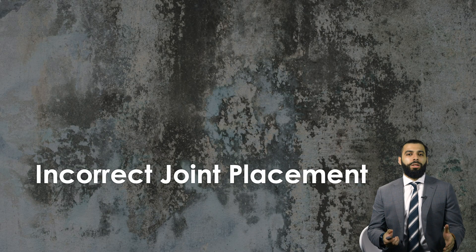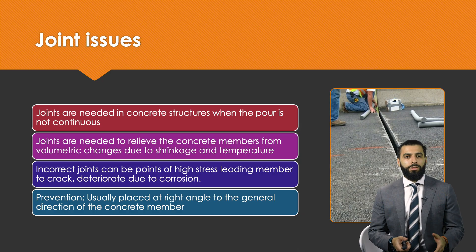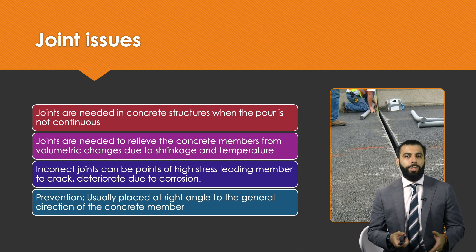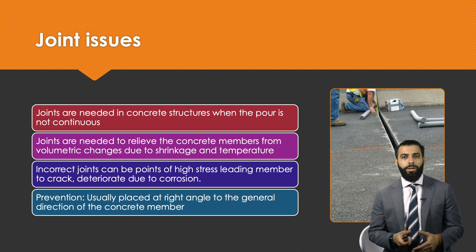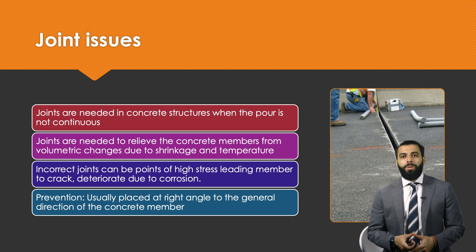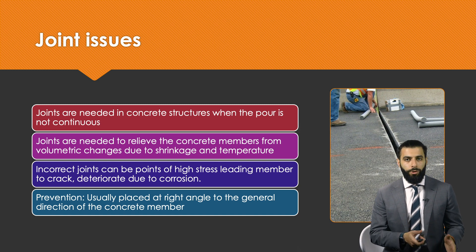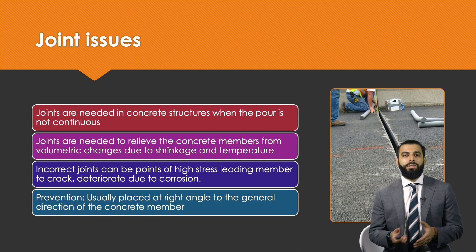The final construction defect is incorrect joint placement in concrete members. Joints are needed because, when pouring a large slab, concrete takes time to arrive on site. You start pouring and then have to wait before the next batch arrives. During that waiting period, the concrete that was already poured starts to set, creating a different interface between the poured concrete and the section yet to be poured.